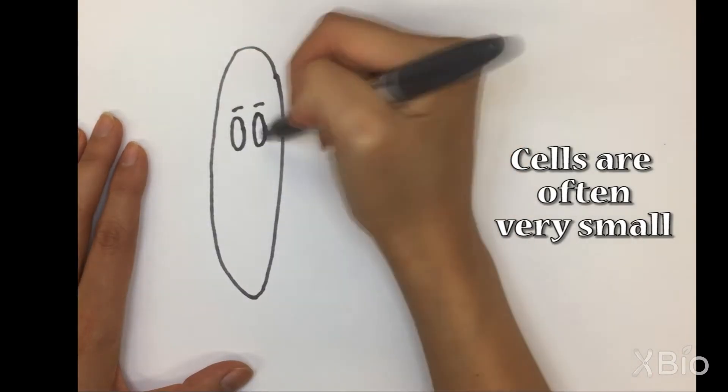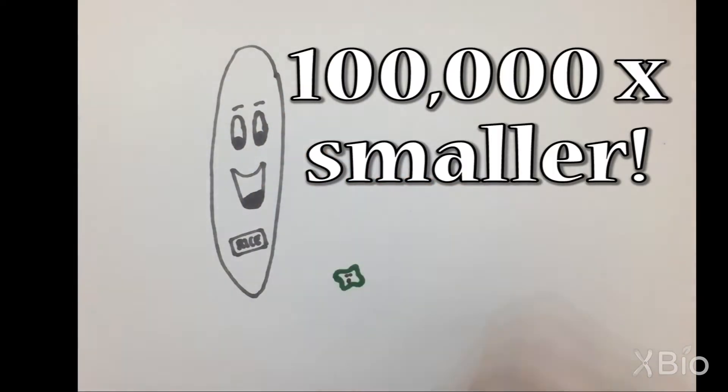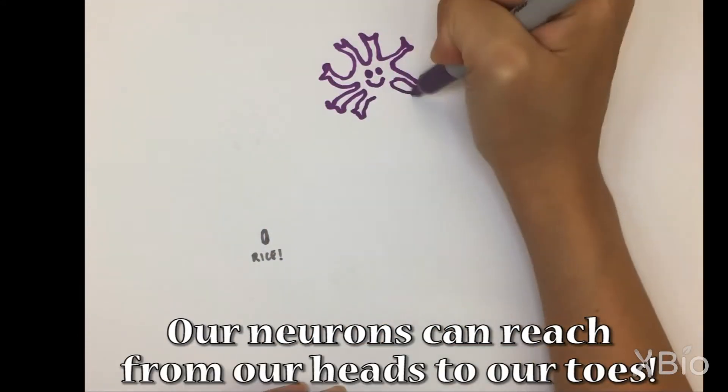Cells are often very small. Most bacteria are 100,000 times smaller than a grain of rice. Some of our cells are much larger. Our neurons can reach from our heads to our toes.